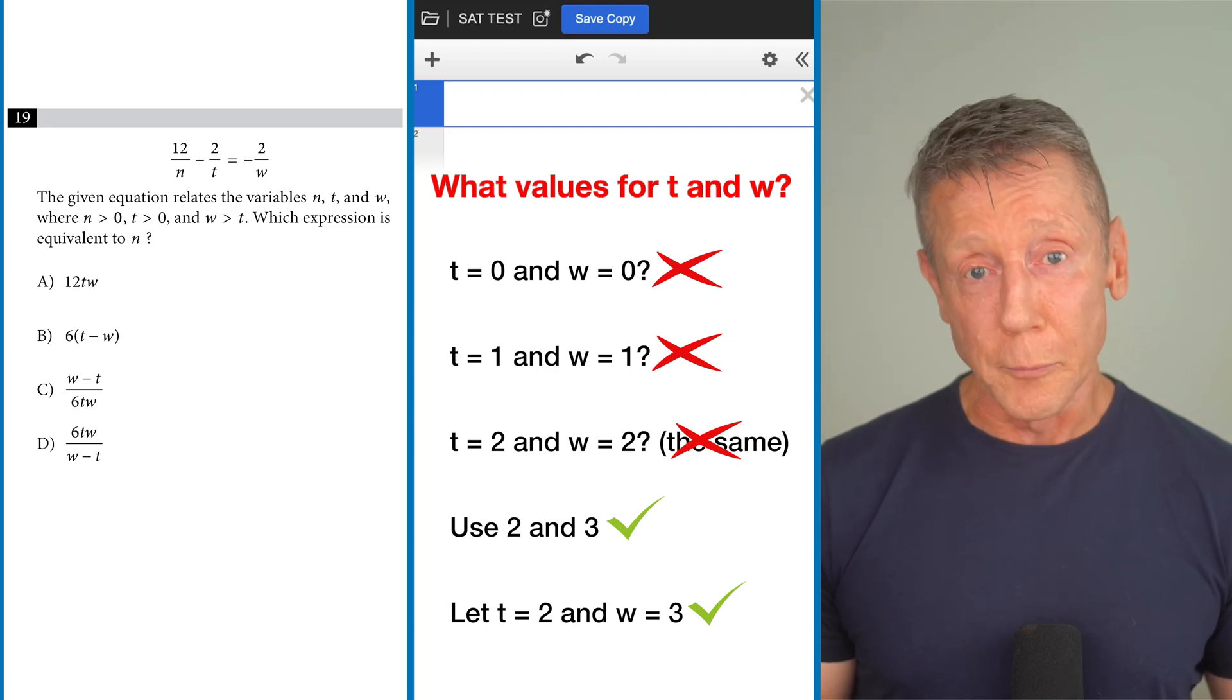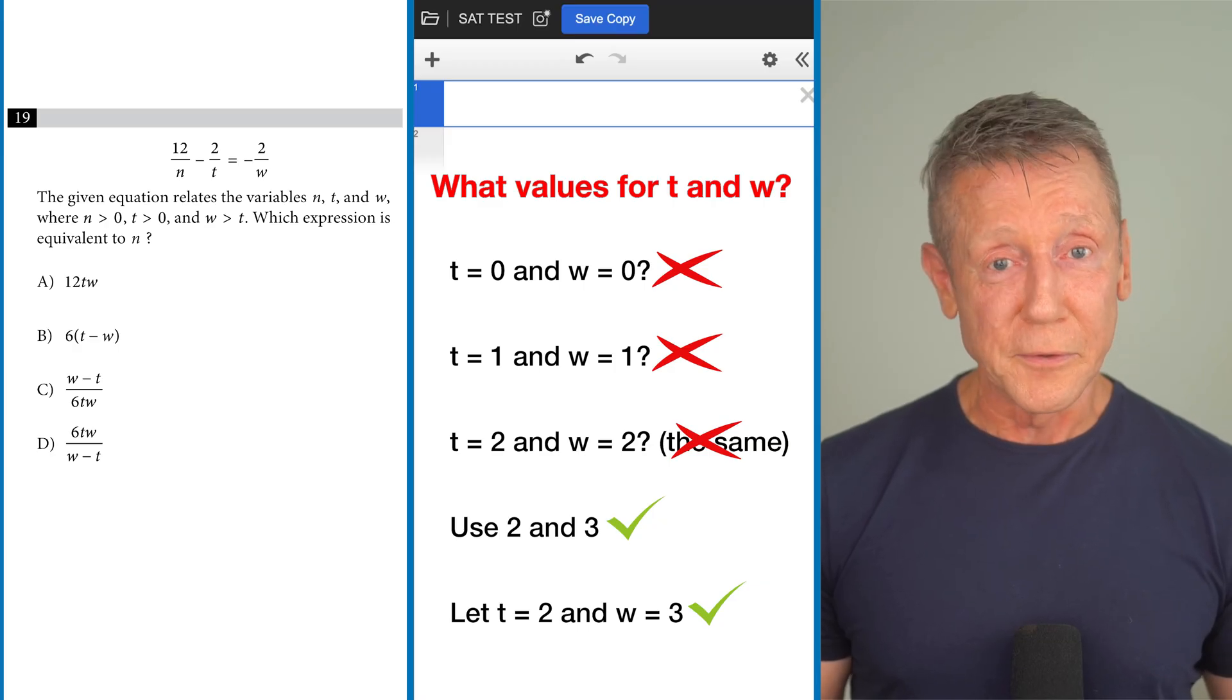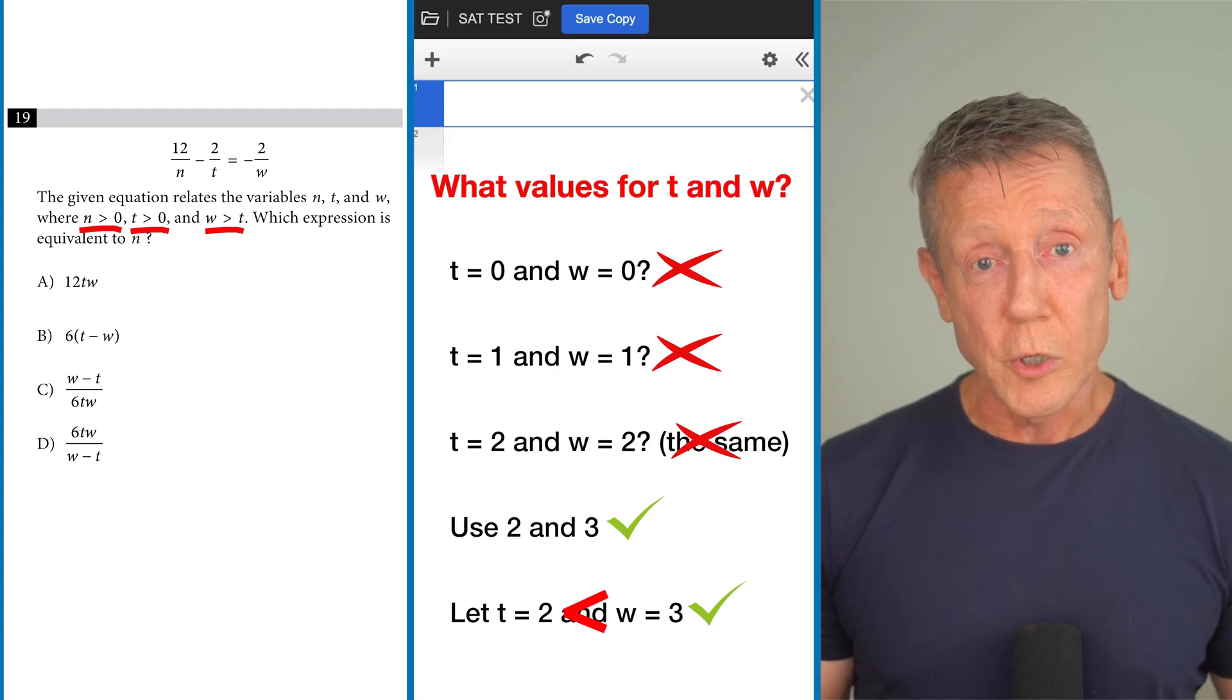So t equals 2, w equals 3. And finally we're going to reread the question to make sure we're not breaking any rules by using 2 and 3. I'm reading the question and I see that n and t are both positive and that w is greater than t, so we're good to go with t equals 2 and w equals 3.